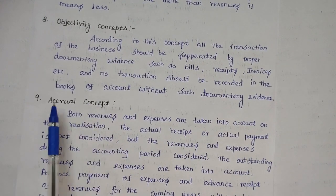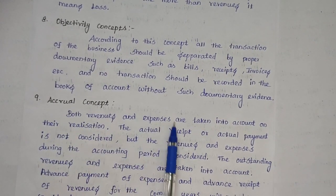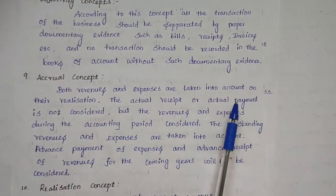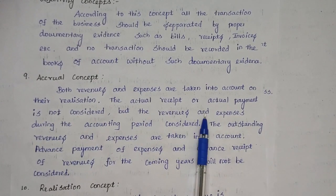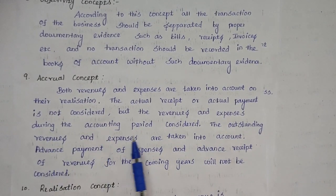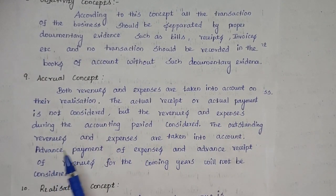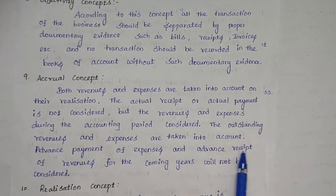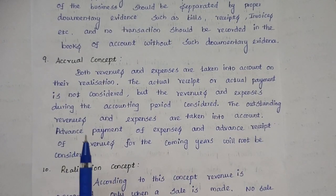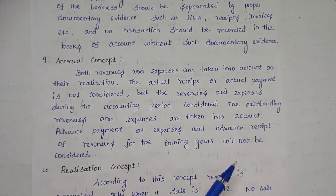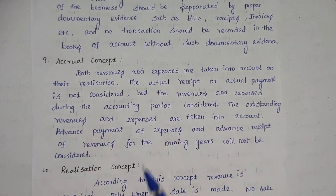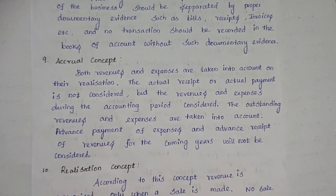The accrual concept states that both revenue and expenses are taken into account on their realization; the actual receipt or actual payment is not the sole consideration. Both revenue and expenses during the accounting period are considered, including outstanding revenues and expenses. Advance payment of expenses and advance receipt of revenues for coming years will not be considered. Only accrued income and expenses — such as outstanding expenses, prepaid expenses, income received in advance, and accrued income — are recorded in the books of account.